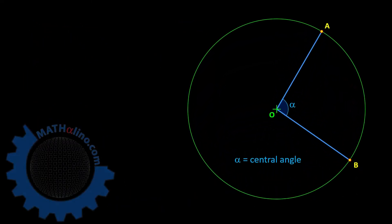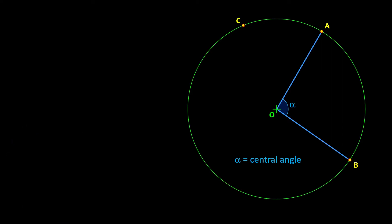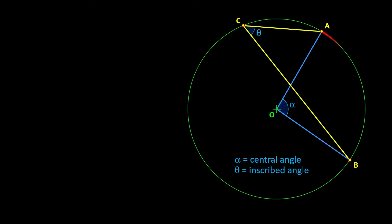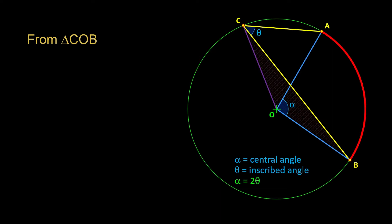In the case where the line rays of Alpha and Theta cross each other but both intercept the same arc, Alpha is still equal to 2·Theta. To show why, connect C to O. We have this isosceles triangle COB. Let us call the two equal angles Theta1.